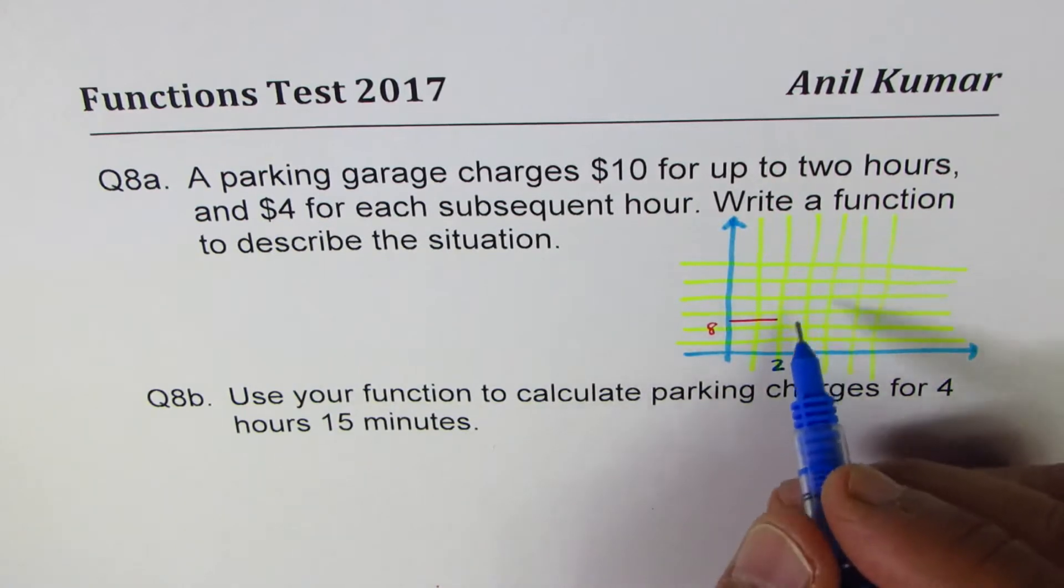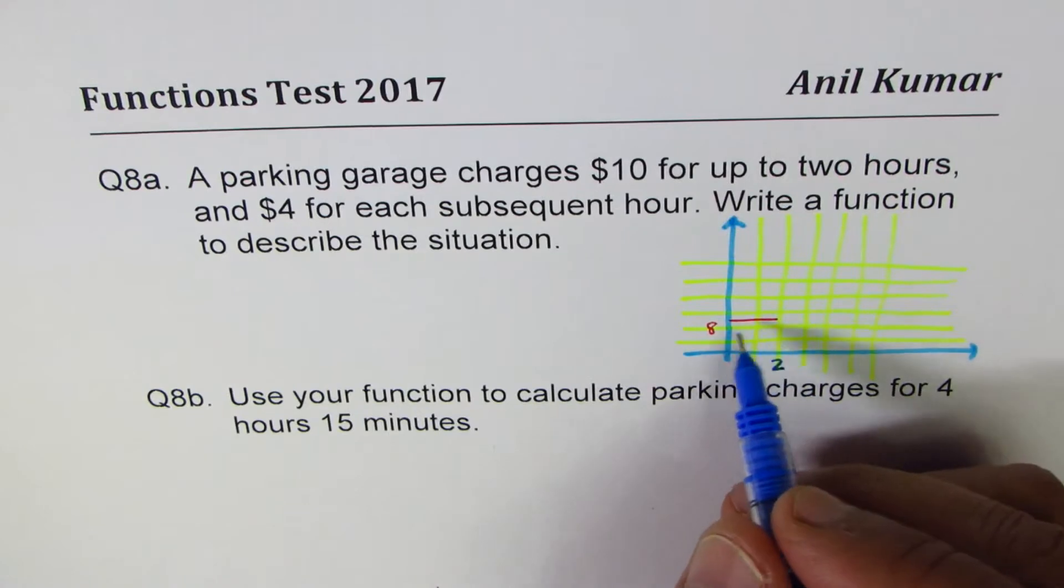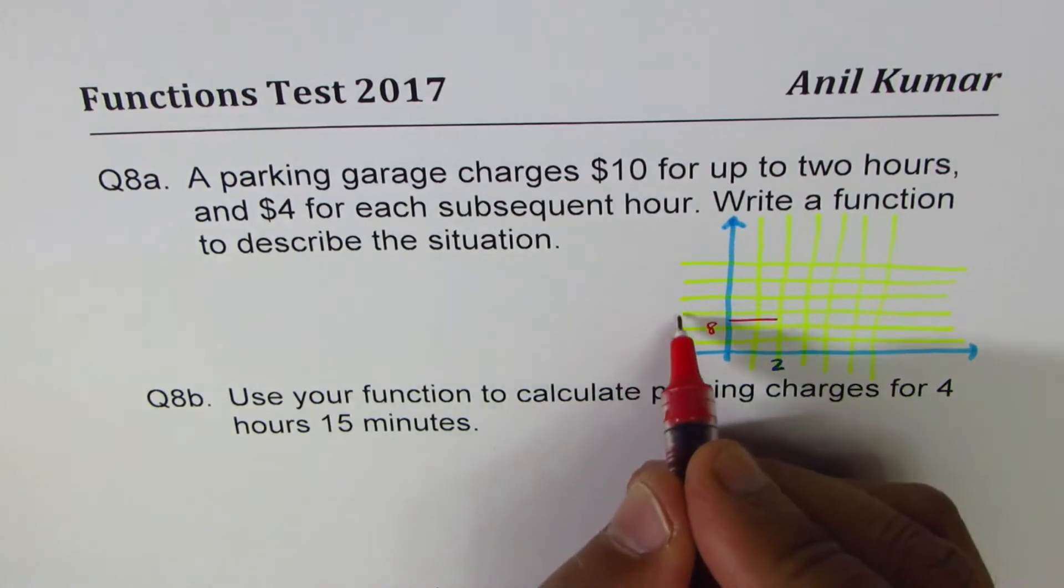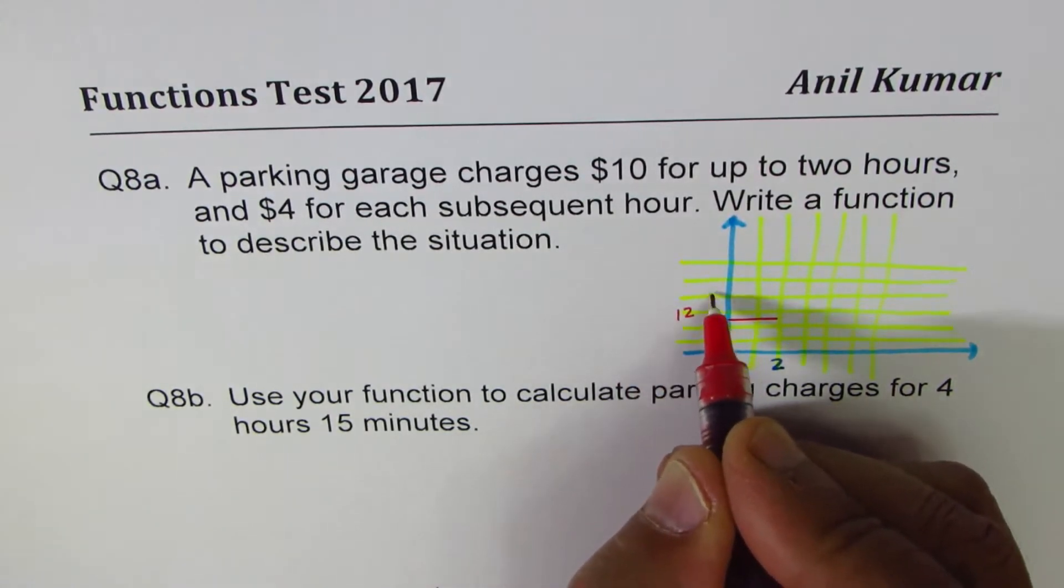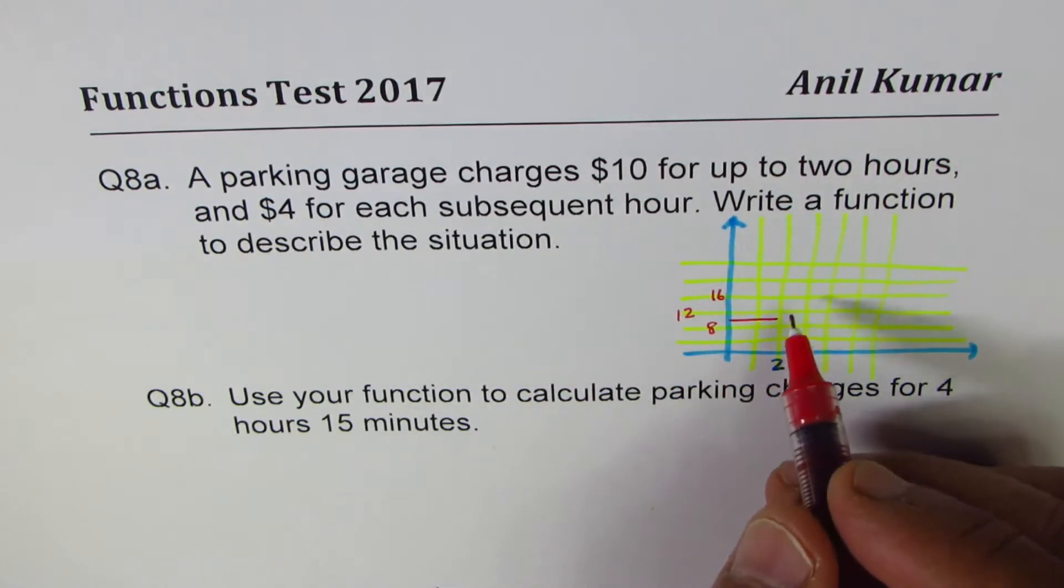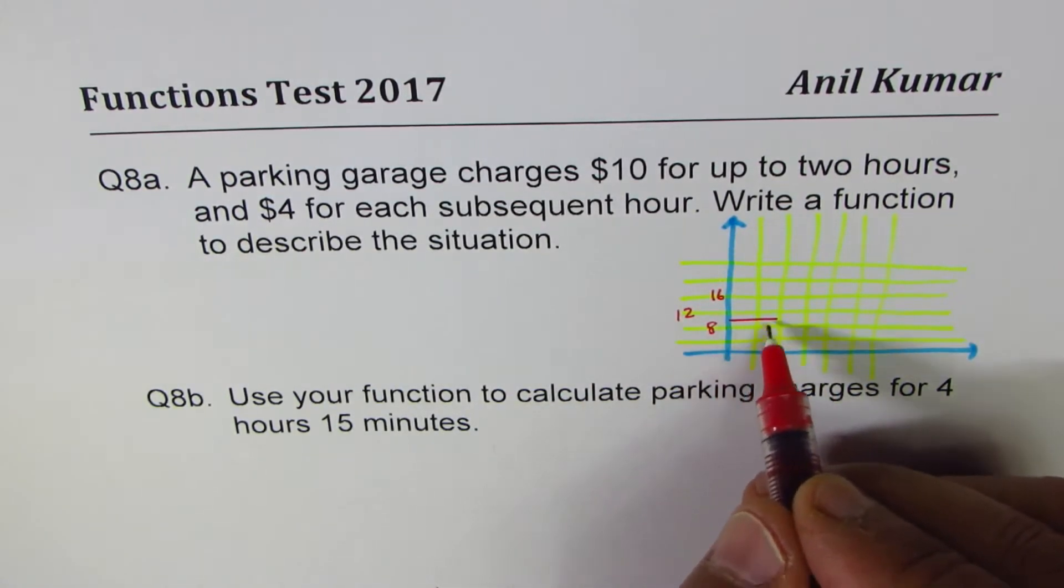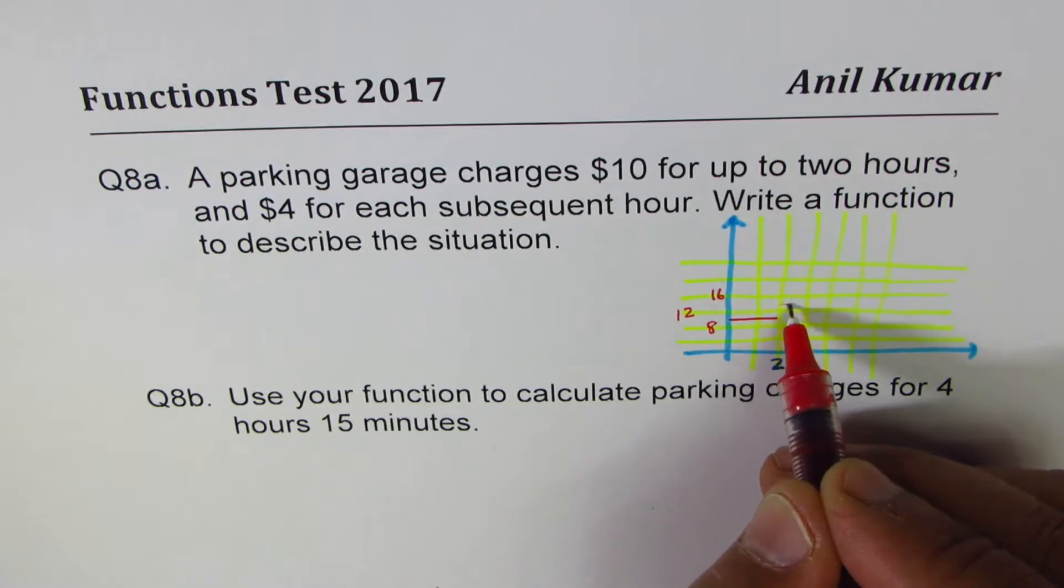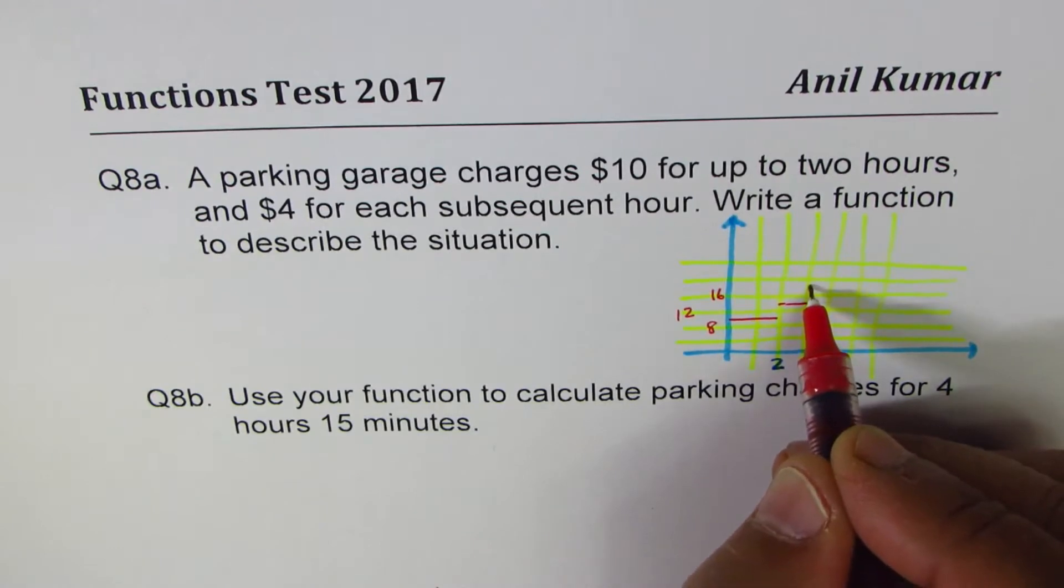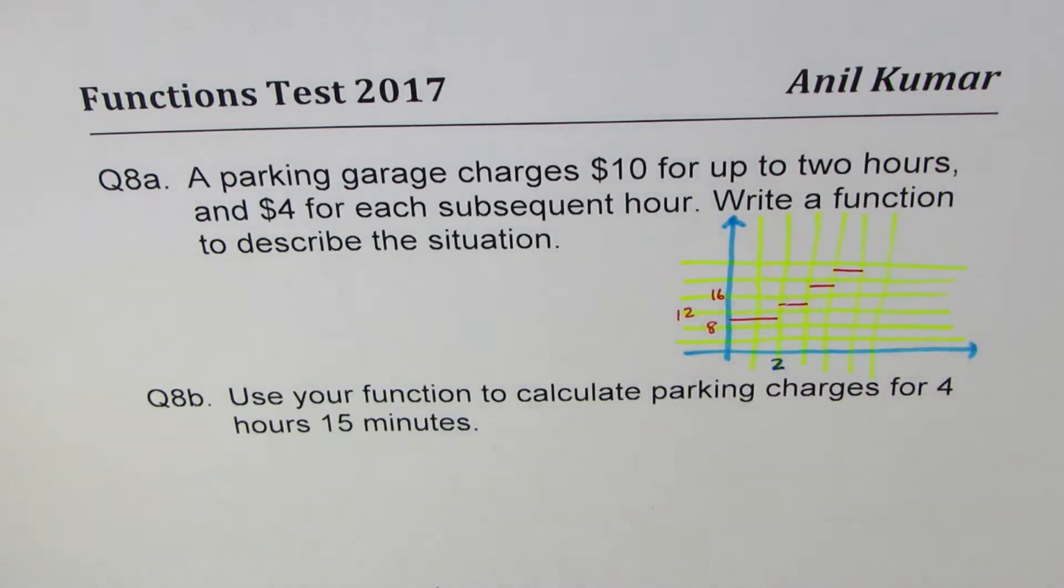And $4 for each subsequent hour. So four, that means 10 plus 4, which is 14. So this is 12, this is 16. So when I say $4 for each subsequent hour, the next hour it will be 10 plus 4, which is 14. So which will be from two to three. And then 18 like this. So that is how the function is going to be.